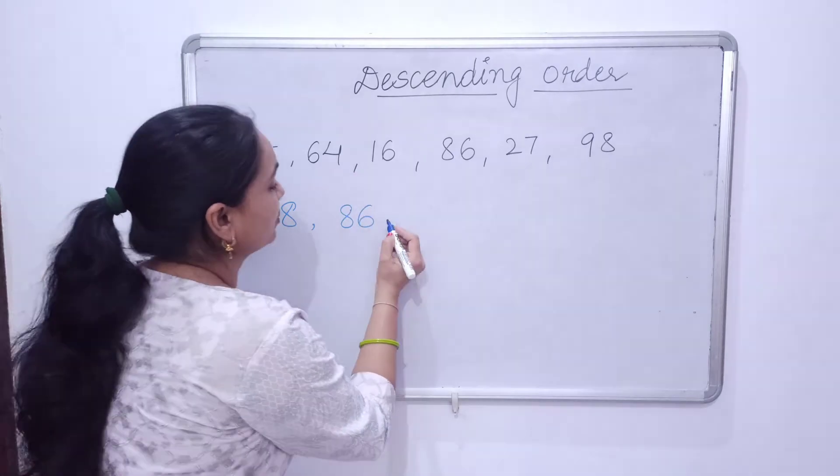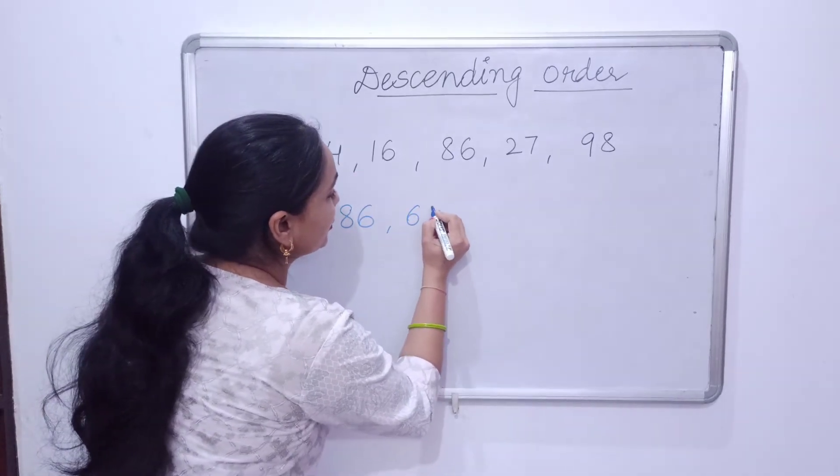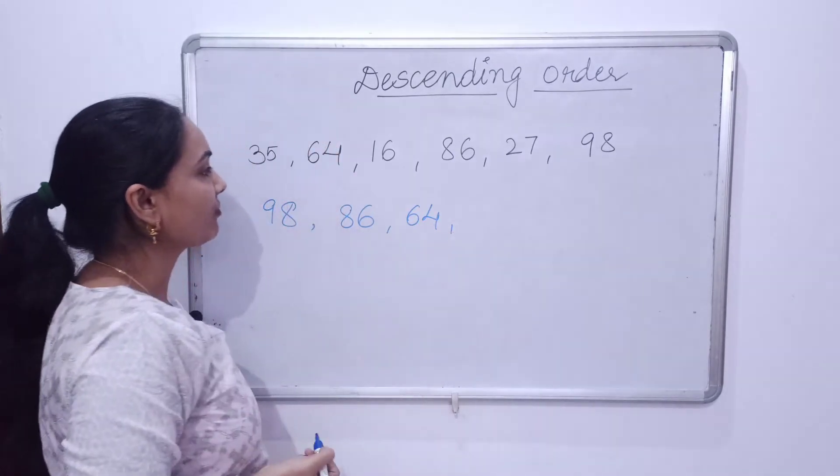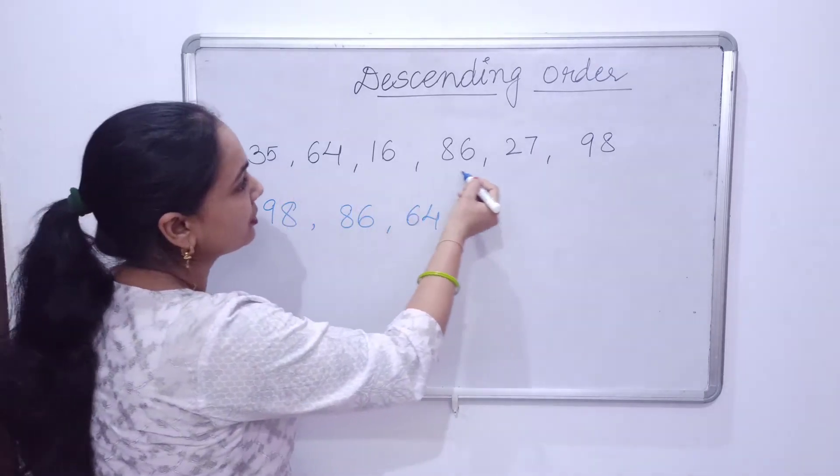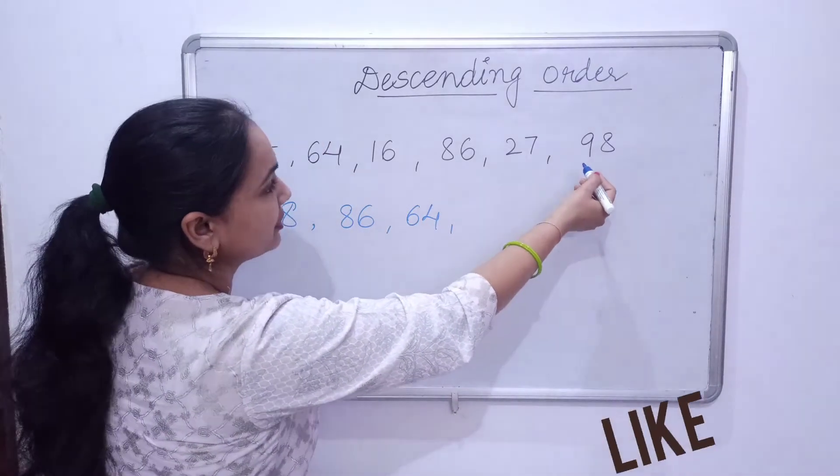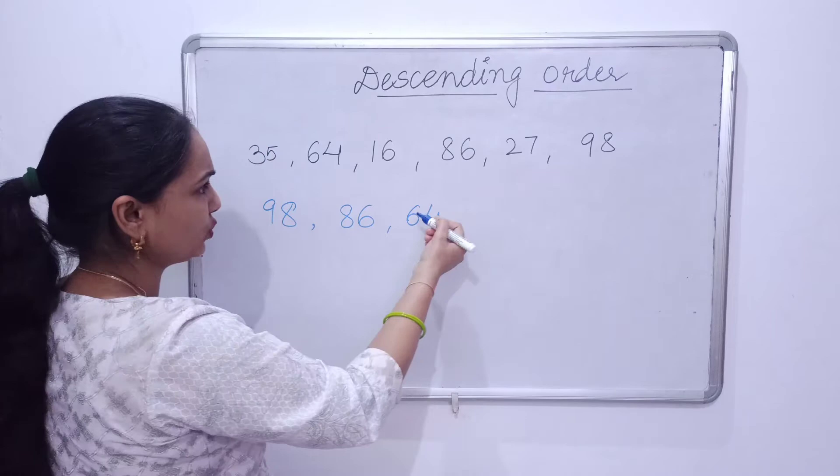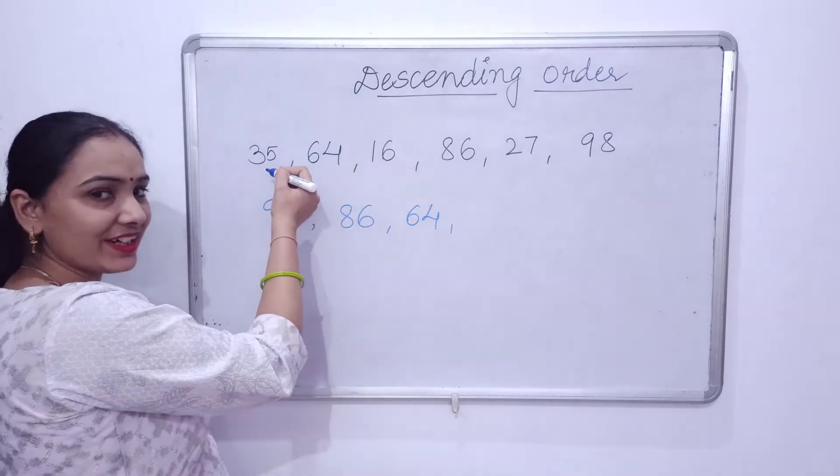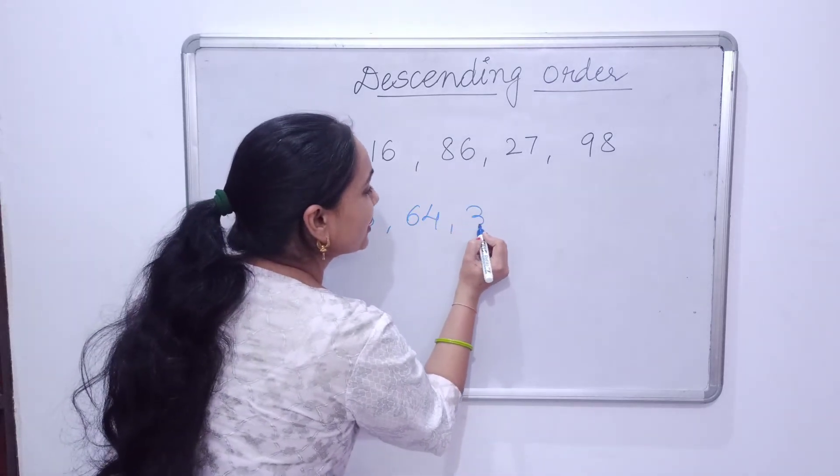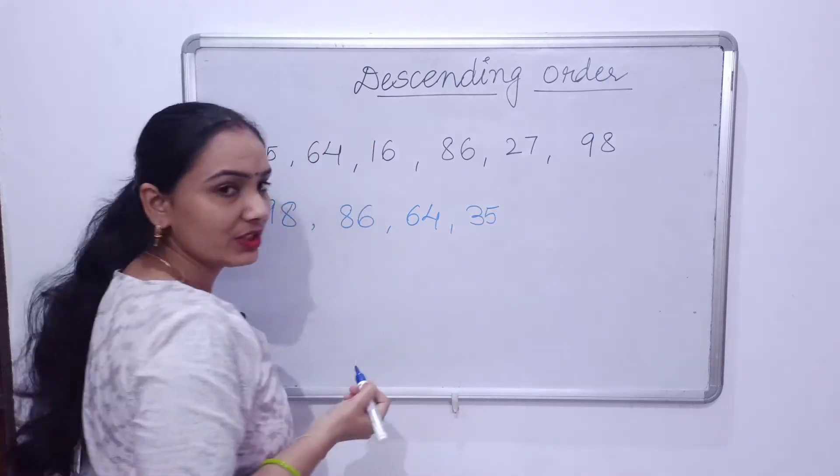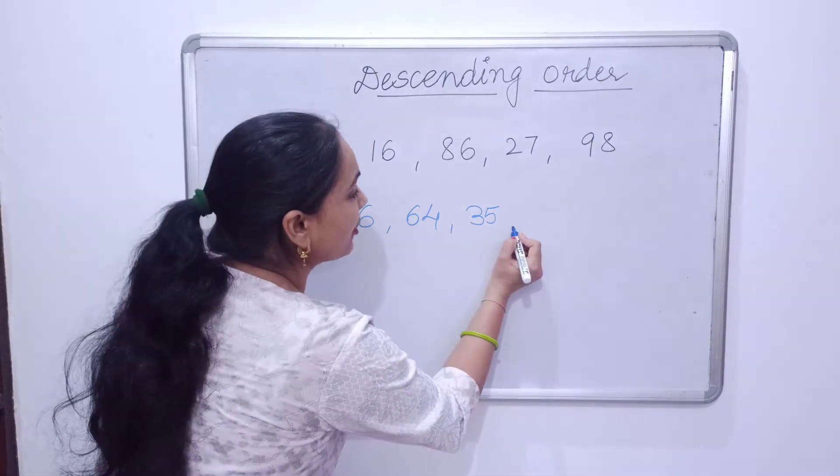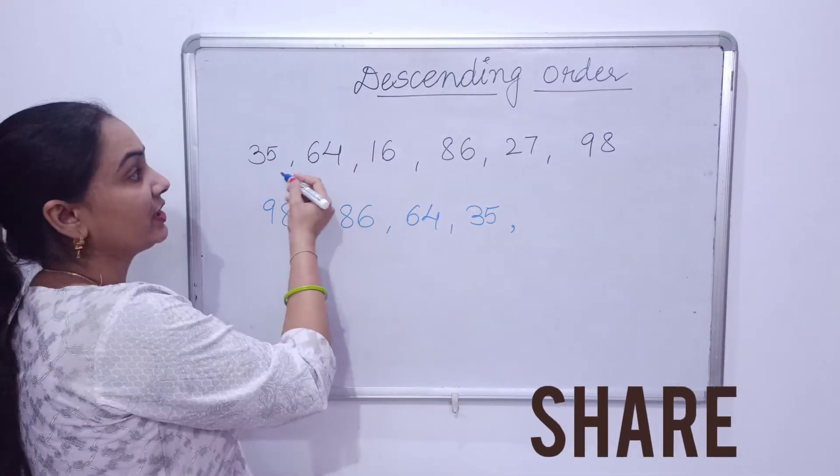64. So 64. Now which will be the next? 27? No. 35. So 35 will come next. After 35, it will be 27.